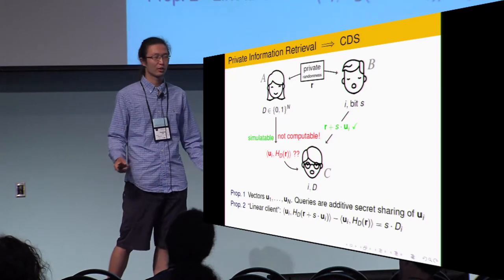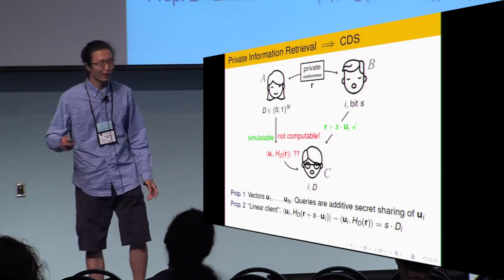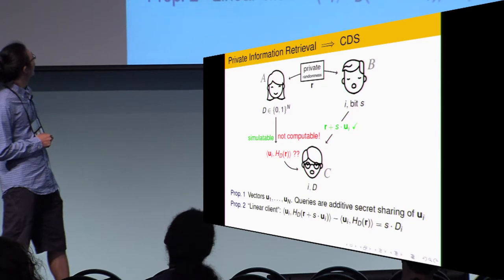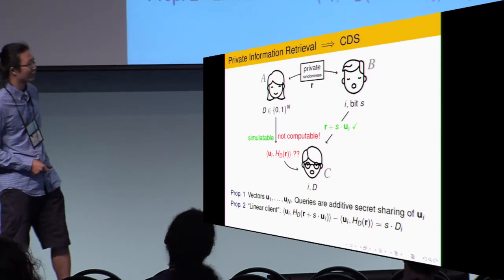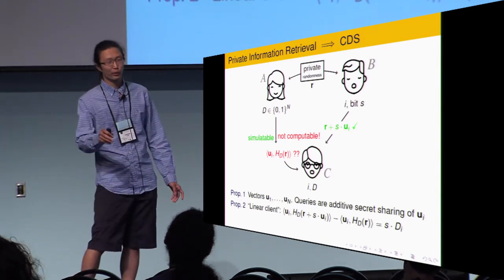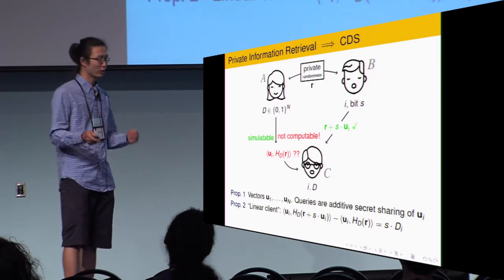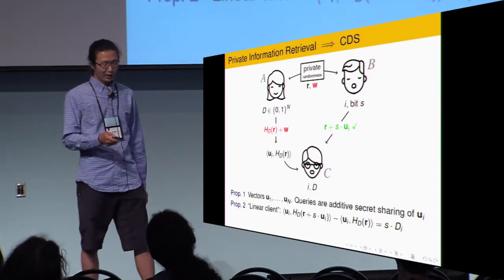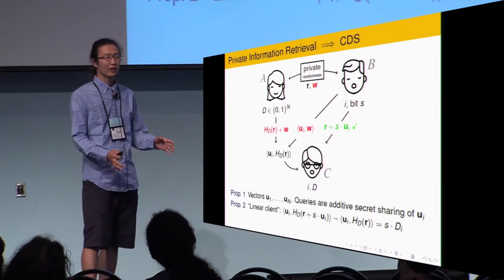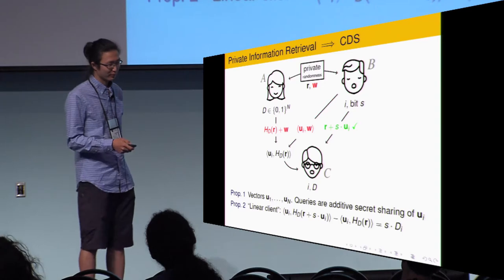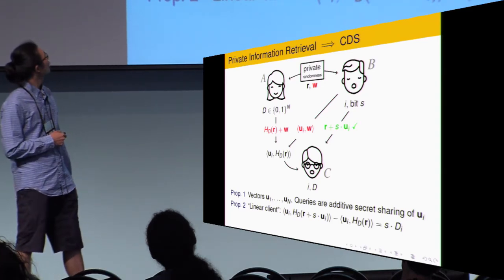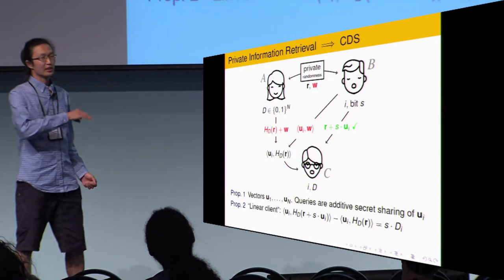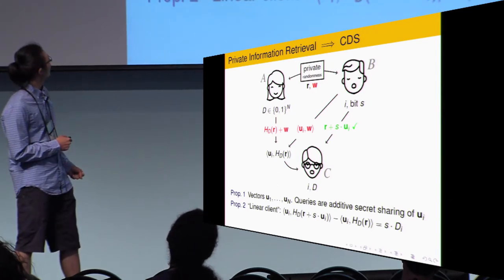But very sadly, Alice cannot send this inner product because Alice cannot compute it. Alice knows I, that knows u_i. Bob knows I. Bob knows u_i. So, Bob can help. So, the current situation is like Alice knows a vector. Bob knows a vector. They want Charlie to learn the inner product without leaking extra information. It's doable. It's actually very simple. It's actually a very simple protocol for this. Alice sent a one-time pad of his, her vector. And Bob sent the inner product between the pad and his vector.